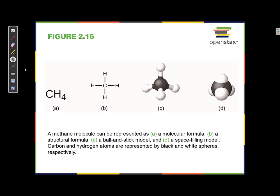In representation D, this is probably the most realistic representation, because atoms are spheres, and when atoms bond together to make compounds, the bond happens when the spheres overlap. Representation C emphasizes the bond as a stick with balls connected by a stick — that's not realistic, because the atoms themselves are overlapping to form that bond. In representation D, we can really see those atoms overlapping to form a molecule. These are all representations of the same molecule, and they all give us a little bit different information about what that molecule looks like.